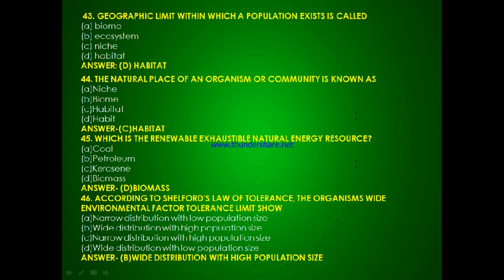Question 42: The natural place of an organism or community is known as — niche, biome, habitat or habit? The answer is C, habitat. Question 43: Which is the renewable exhaustible natural energy resource — coal, petroleum, kerosene or biomass? The answer is D, biomass.